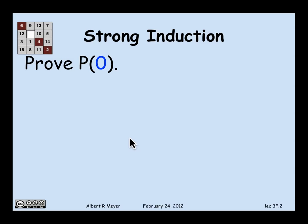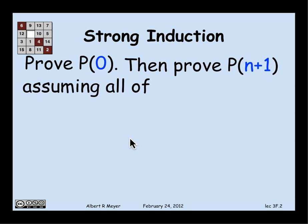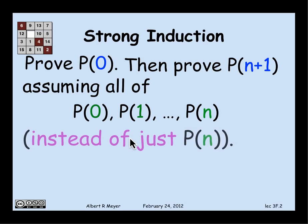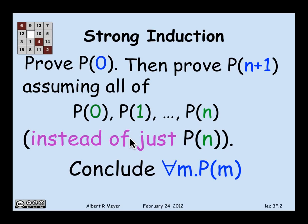But now, in order to prove P(n+1) in the inductive step, assuming P(n) with ordinary induction, with strong induction you can assume not just P(n), but you can assume P(0), P(1), all of the properties, that all the numbers up through n have the property. And from this, of course, you could conclude that everything has the property, that for all n, P(n).